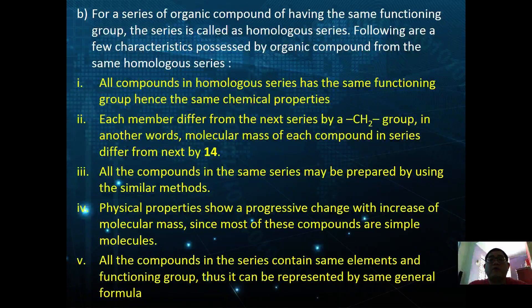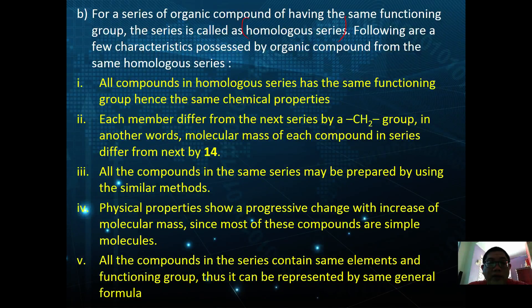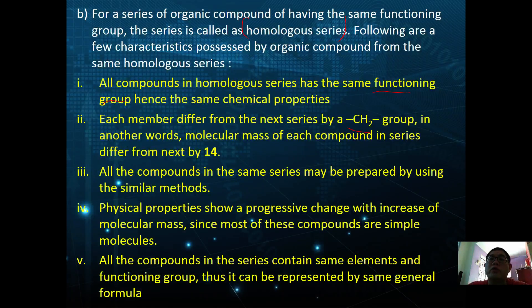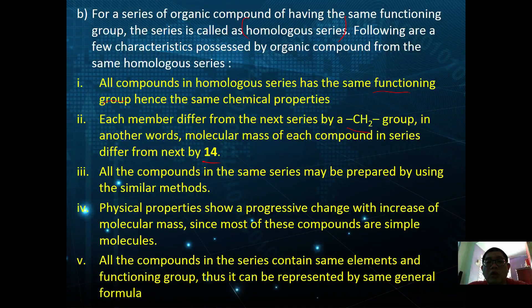A series of organic compounds having the same functional group is called a homologous series. The characteristics are: first, all compounds in the homologous series have the same functional group, therefore the same chemical properties. Second, each member of the homologous series differs from the next by a CH₂ group, meaning each successive member differs in relative molecular mass by 14.